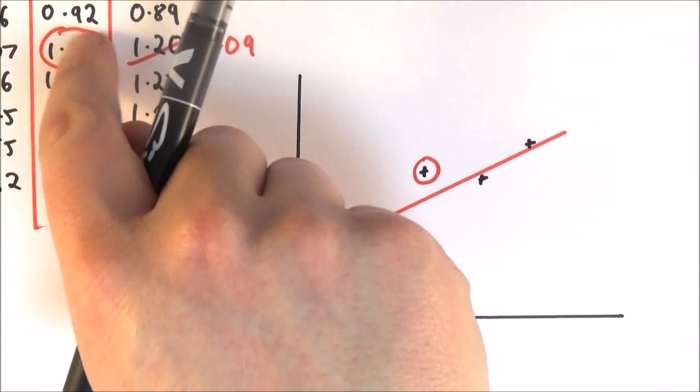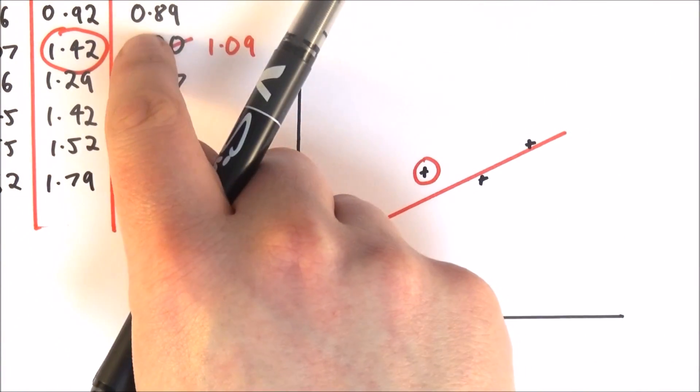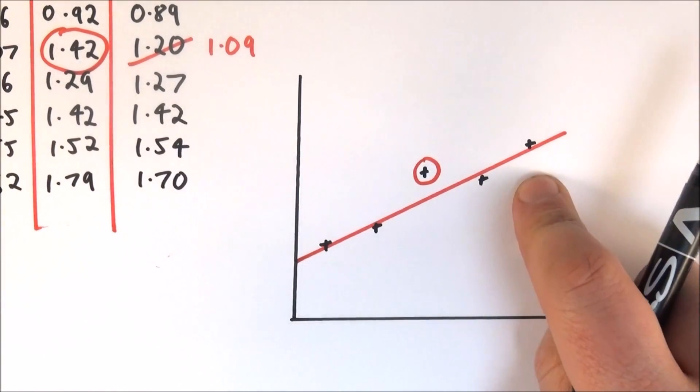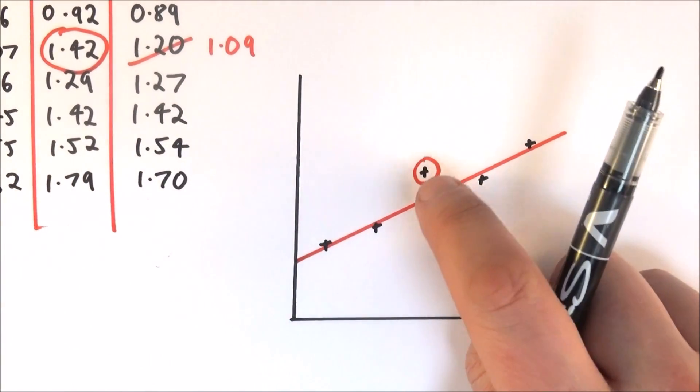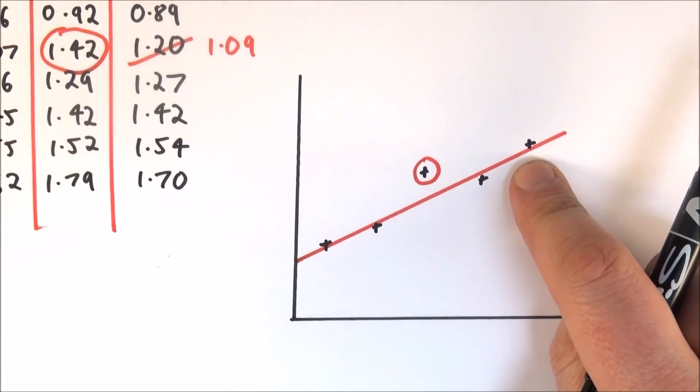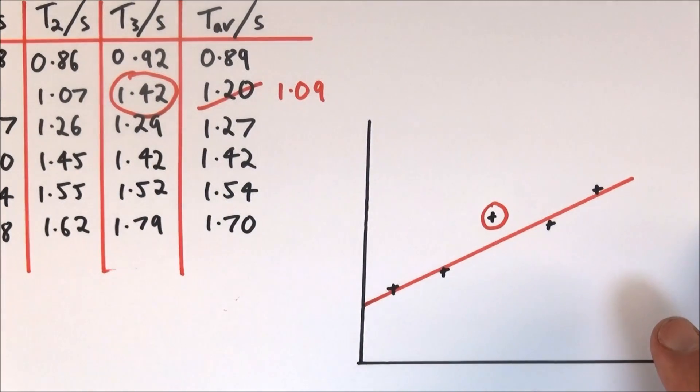So really two ways: you can either discard it from your initial results to work out a better average, or maybe sometimes you don't see it till you actually plot your points at the end. In that case, an anomalous result, the outlier, is one that you just discard and then you don't include that when you're maybe trying to draw your line of best fit. So hopefully that all makes sense. Thank you.